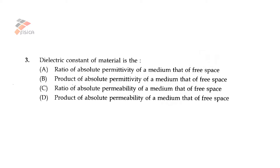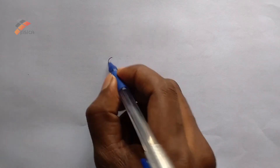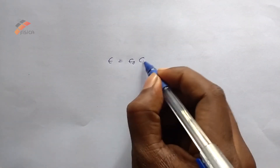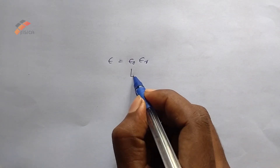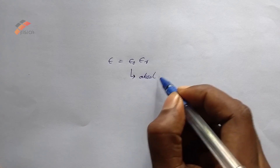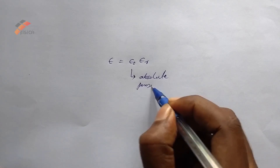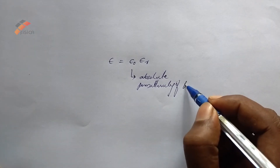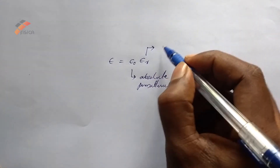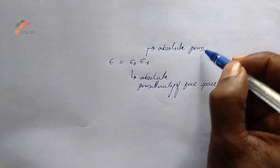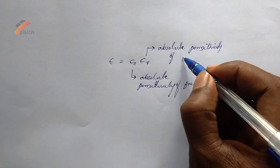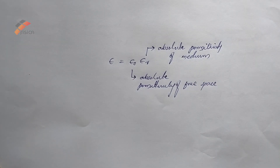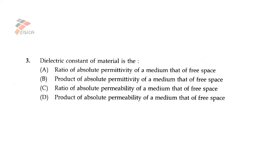The dielectric constant of a material is epsilon, which equals epsilon_0 times epsilon_r, where epsilon_0 is the absolute permittivity of free space and epsilon_r is the absolute permittivity of the medium. So the dielectric constant of a material is the product of the absolute permittivity of the medium and that of free space. Therefore, option b is the correct answer.